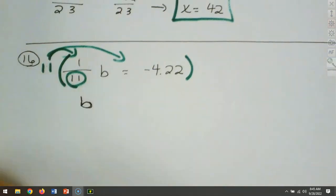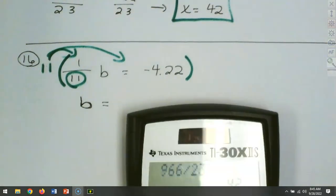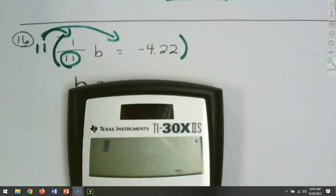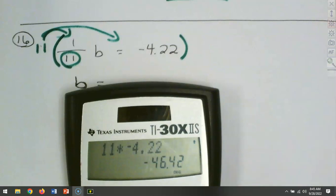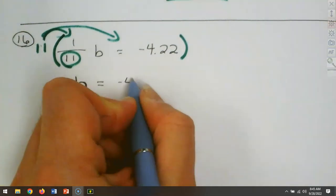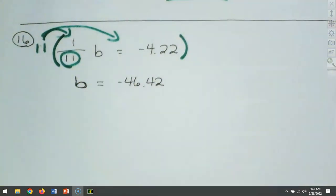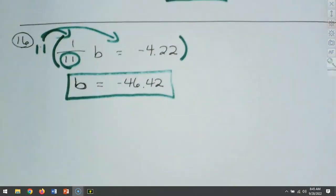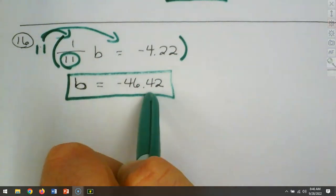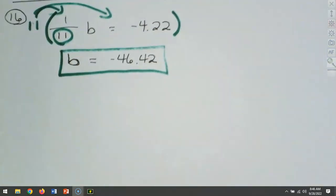On the right-hand side, that has to be distributed through, so we've got 11 times negative 4.22, which gives minus 46.42. Are we done? Yes. Here's what happens a lot of times — students think there's more to do. But how do we know we're done? We've got the variable on the left, and everything else — the numbers — are on the right. That's what we want. That's when we know we can stop.